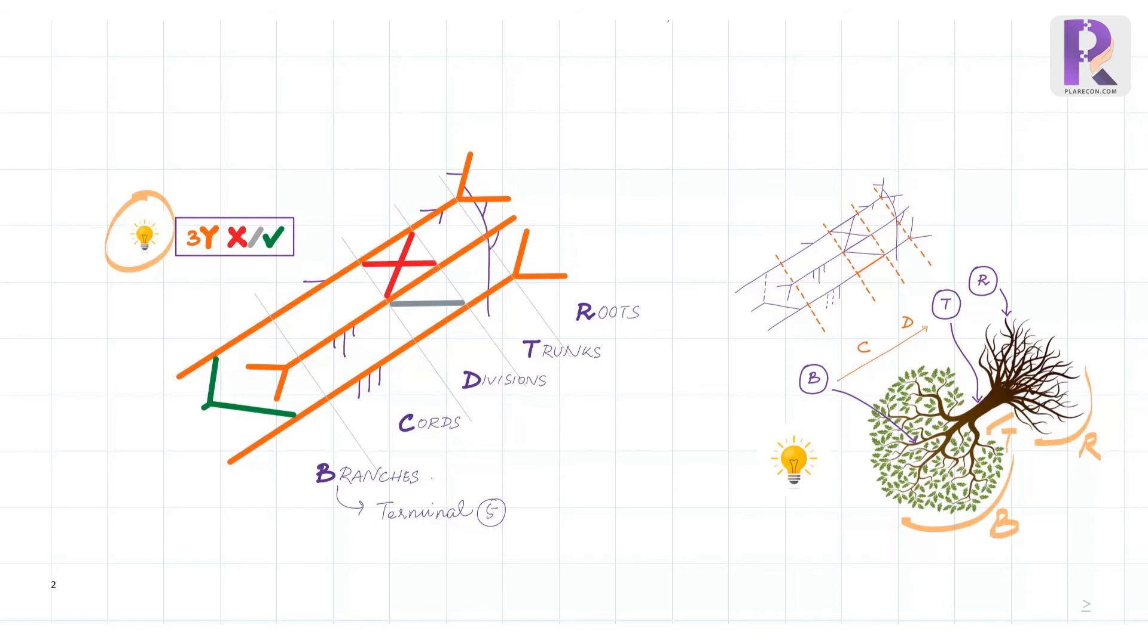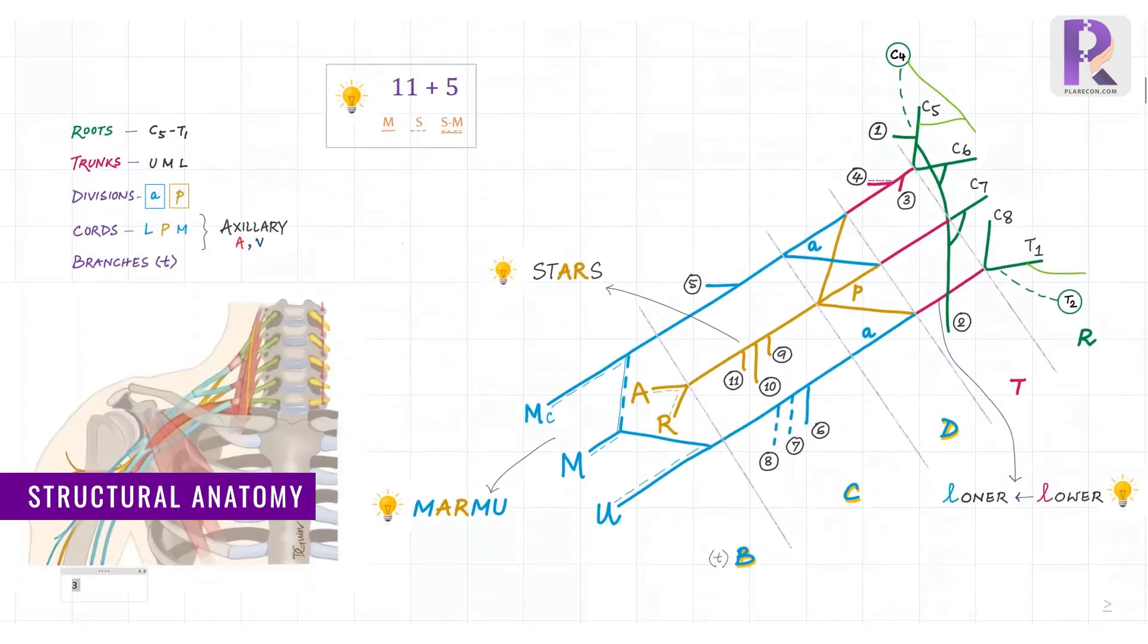But then how do we remember the cords and the divisions? Well, from distal to proximal, they are arranged in the alphabetical order.